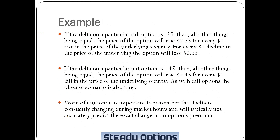Word of caution: it is important to remember that Delta is constantly changing during market hours and will typically not accurately predict the exact change in options premium. This is especially true for options that are close to expiration. As the stock moves, the Delta will change as well — if the Delta is 50 and the stock moves up, the Delta will increase; if the stock moves down, the Delta will decrease.